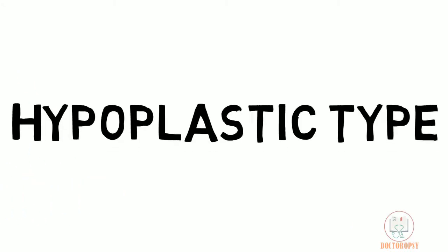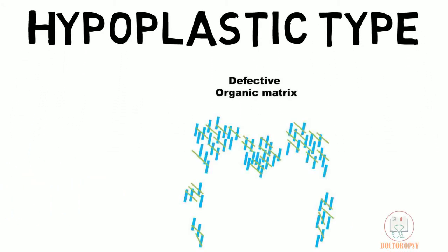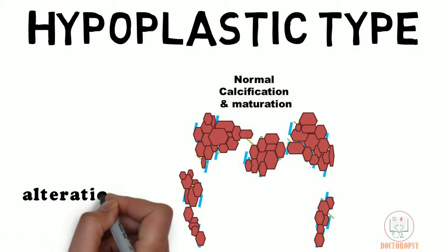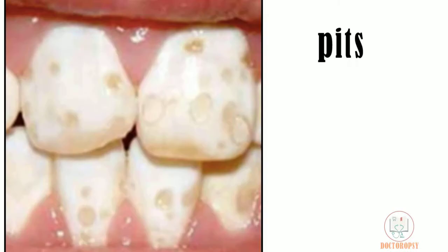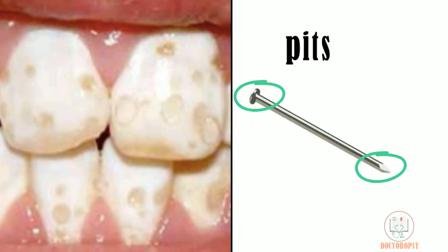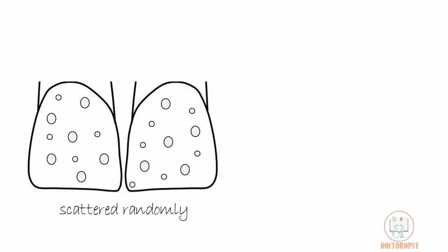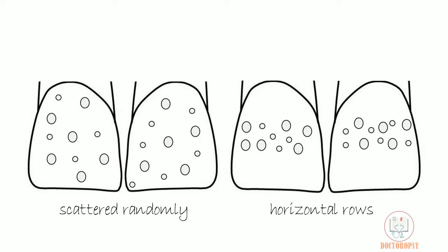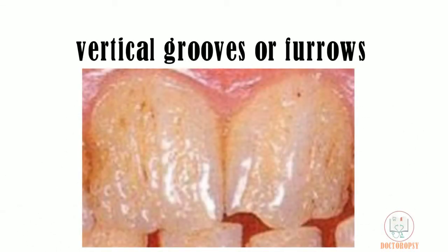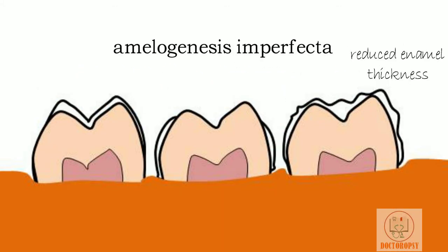In hyperplastic type, the main defect lies in the organic matrix; however, calcification and maturation are normal. The defective enamel matrix causes alteration in the shape and size of the crowns. The crown enamel may show pinpoint to pin-head sized pits, which may be scattered randomly or arranged in horizontal rows, usually more prominent in the middle third of the crown, with the labial surface showing more pitting. Teeth may also show vertical grooves or furrows.